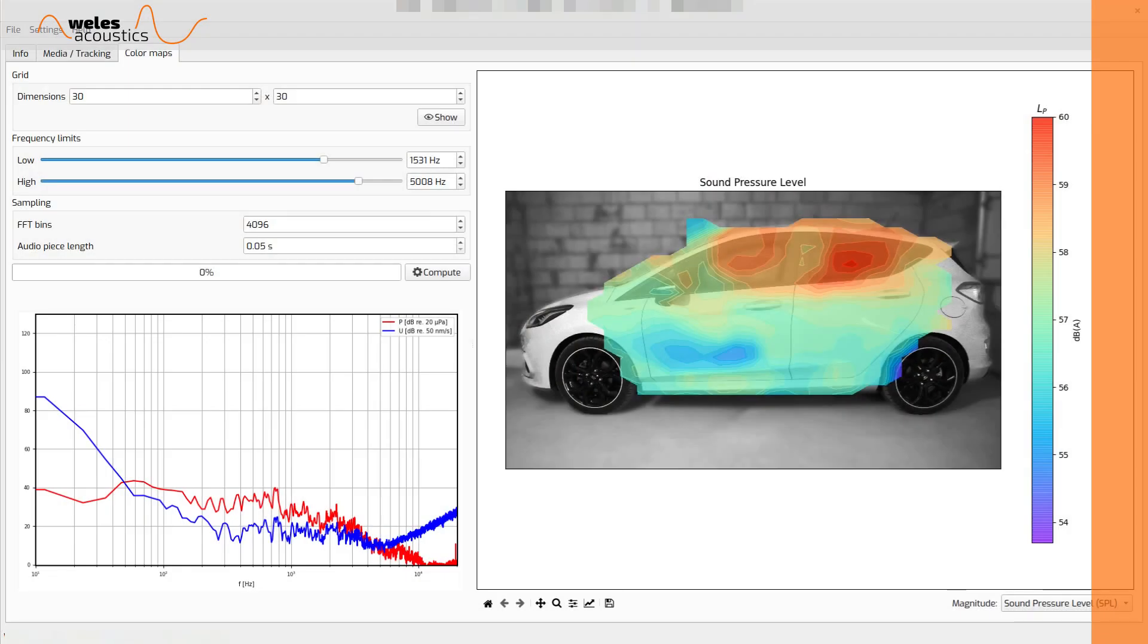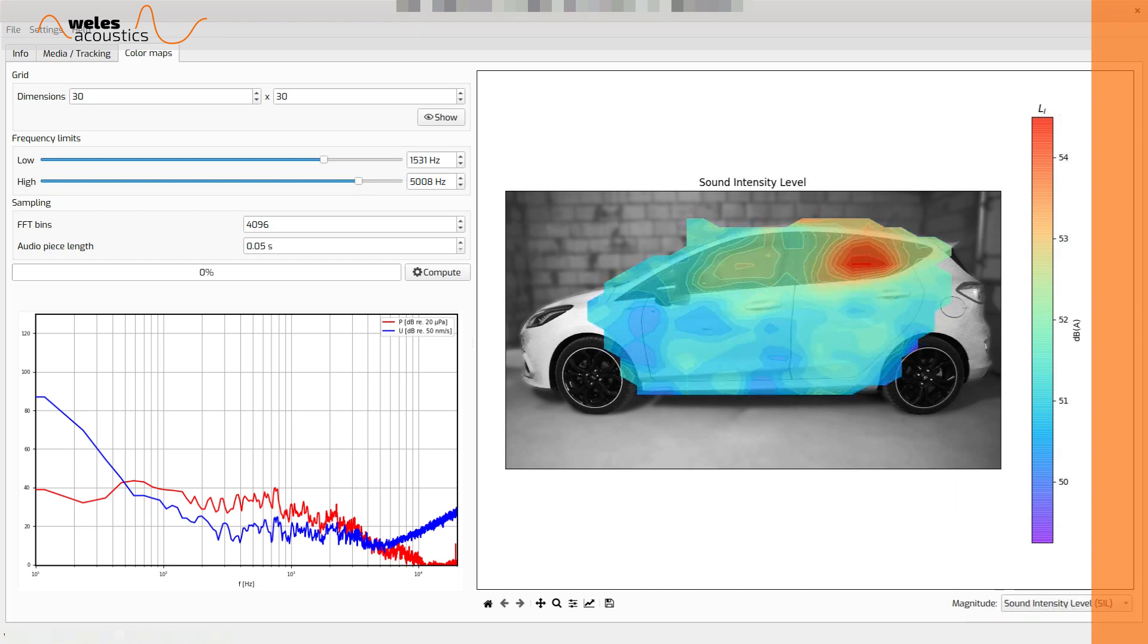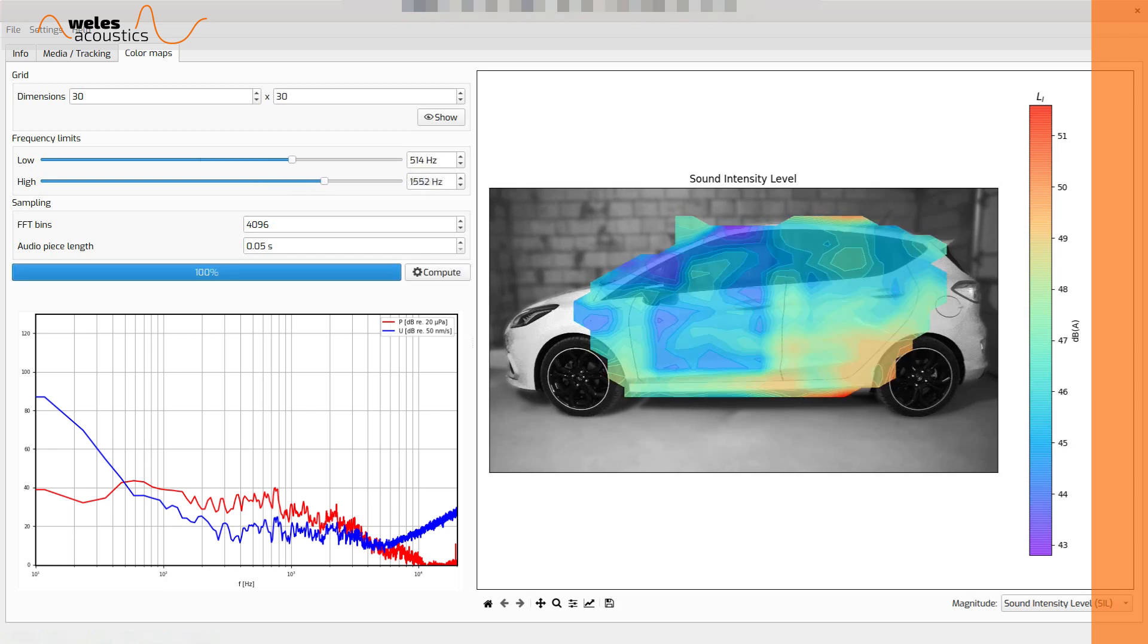The system will allow you to visualize the distribution of sound pressure, particle velocity or sound intensity. Regardless of the physical quantity you choose to map, you can always filter the sound map for any frequency range you would like to investigate. This feature is only limited by the capabilities of the WA-101PU probe.